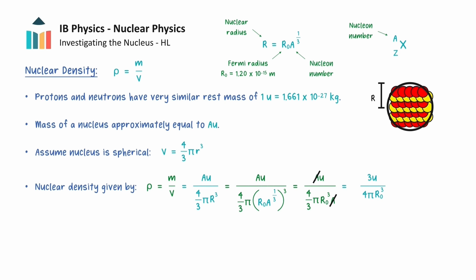Of particular note, this final expression contains only constants, and shows that nuclear density does not depend on the number of nucleons or the radius of the nucleus. This means that we can conclude that the density of all nuclei is approximately the same, and this has a value of 2.3 times 10 to the power 17 kilograms per meter cubed, which is an extremely large density.